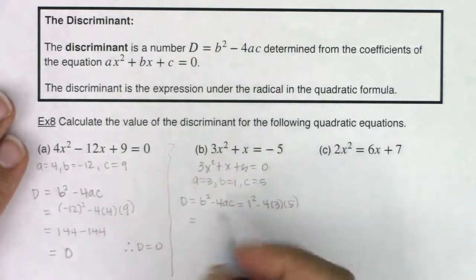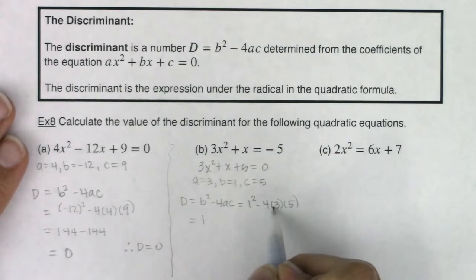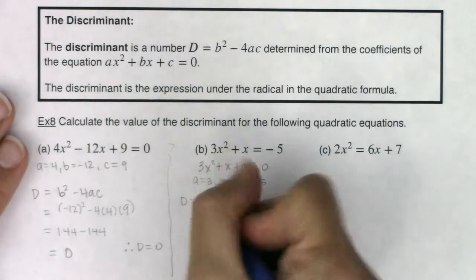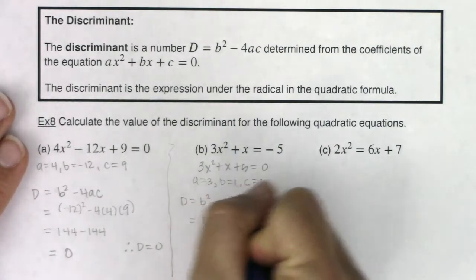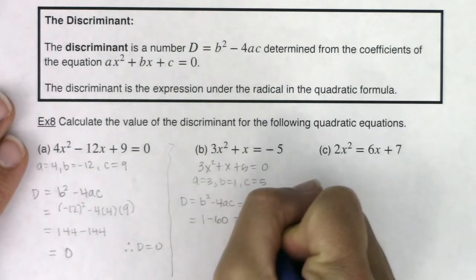So we are looking at 1. 4 times 3 is 12. 12 times 5 is 60. So I am looking at negative 59.